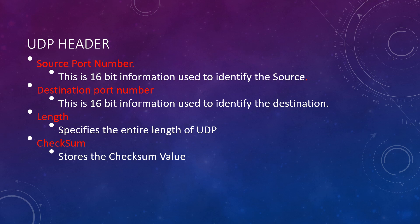What is the use of checksum here? This field stores the checksum value generated by the sender before sending. In IP version 4, the checksum field is optional, so when the checksum field does not contain any value, it is made 0 and all its bits are set to 0. This is the header format of the UDP protocol. This is about User Datagram Protocol — thank you.